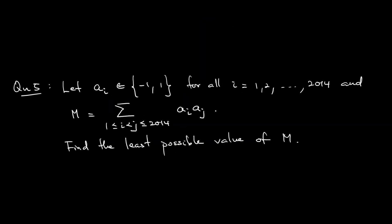Question 5. Let aᵢ take the value either 1 or −1, for all i = 1, 2, 3, …, 2014. Capital M is defined as the summation over all pairs i < j of aᵢ × aⱼ. The question asks: what is the least value of M?